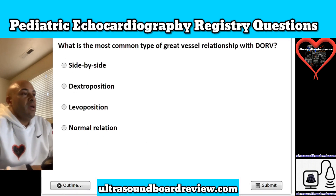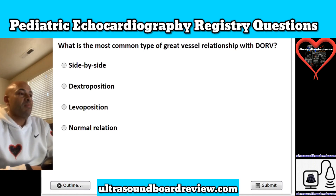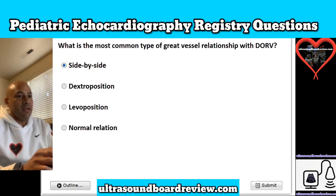Question 23. What is the most common type of great vessel relationship with double outlet right ventricle? Is it A, side-by-side; B, dextro position; C, levoposition; or D, normal relation? The answer is A, side-by-side.